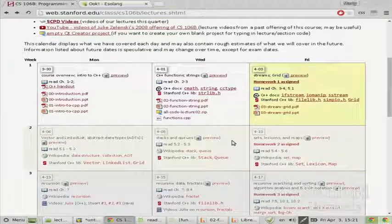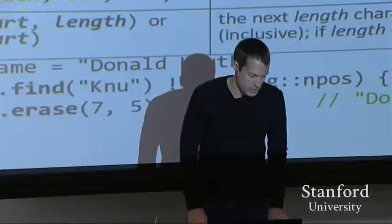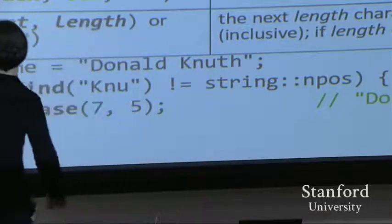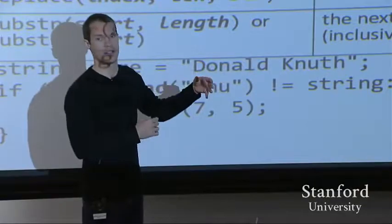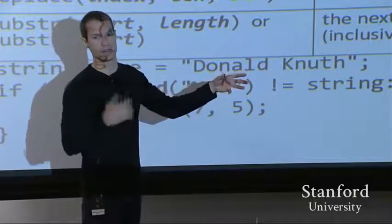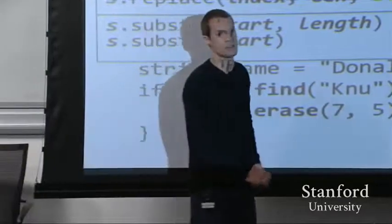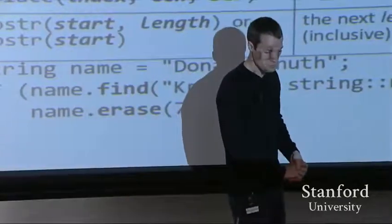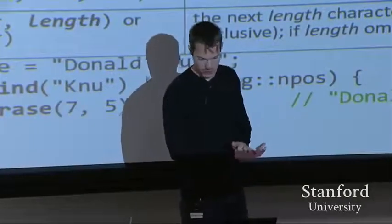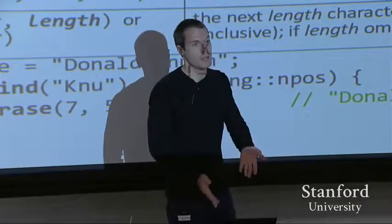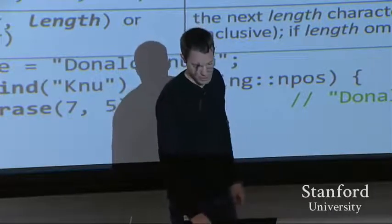What's the difference between string dot find and s dot r find? s dot find and s dot r find. r find means reverse find, find from the back. So it'll find the last occurrence of that substring versus the first occurrence of that substring. Those are only different if that substring occurs more than once in the overall string. Anyway, these are some of the methods that you can call on strings in C++.